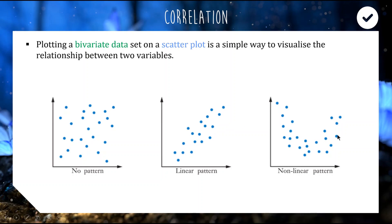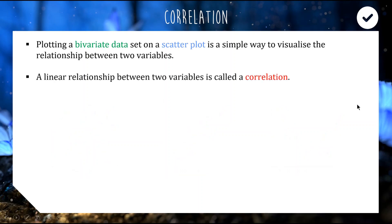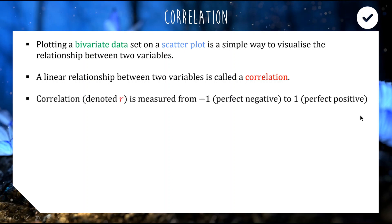A correlation just means that there is a linear relationship between the two variables. We have a symbol to denote correlation — because correlation is a description, but it's also actually a statistic. You can calculate how correlated a data set is.